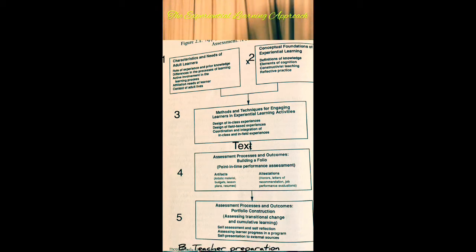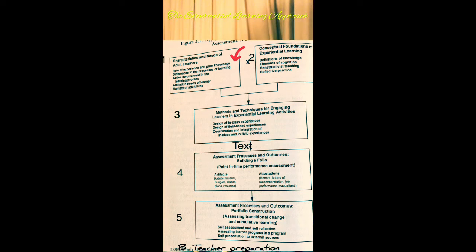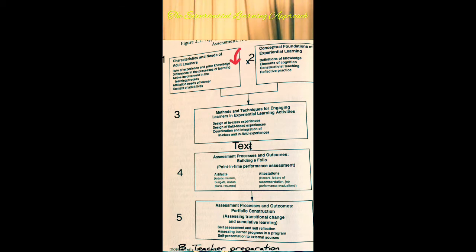Part B covers teacher preparation. For Box one — characteristics and needs of adult learners — we look at differences in prior teaching experience, differences in social supports such as child care responsibilities, and differences in career affiliation needs, for example, having one's own classroom versus collaborating with other teachers.